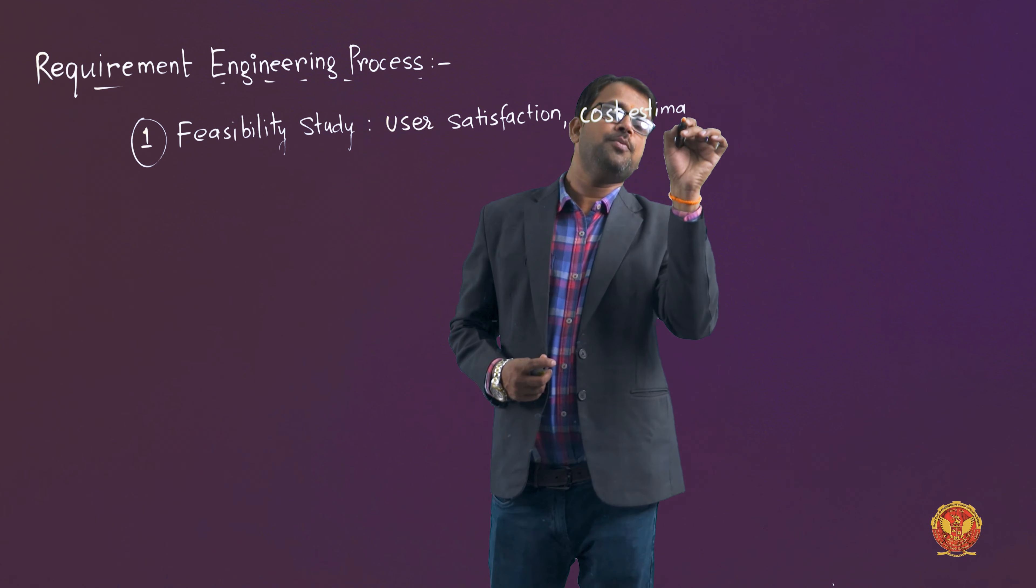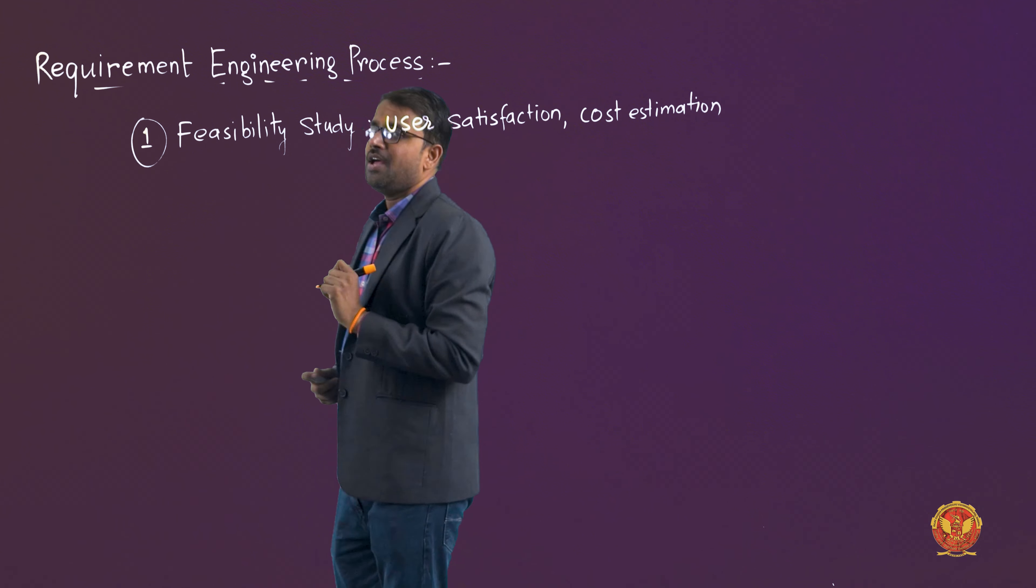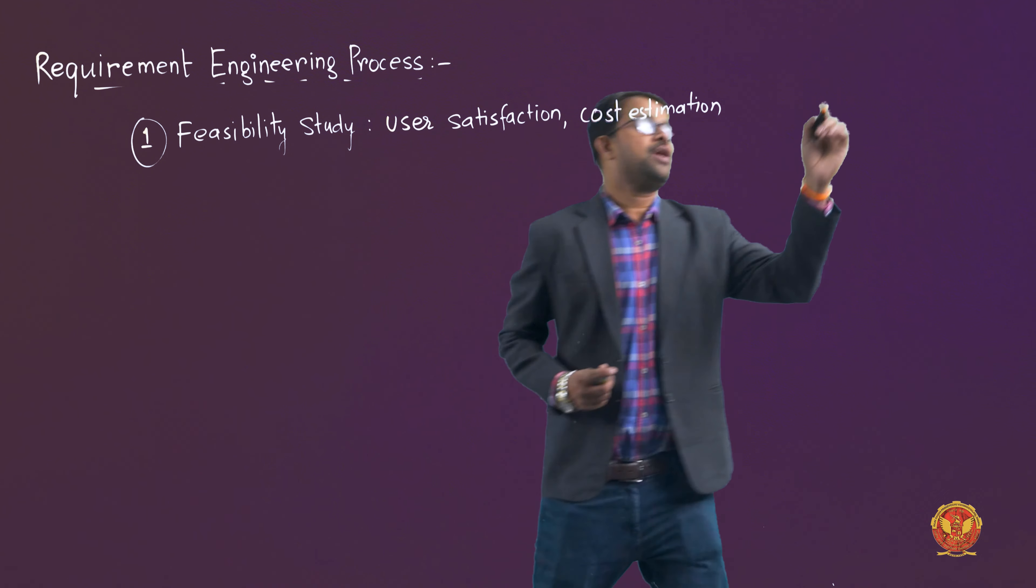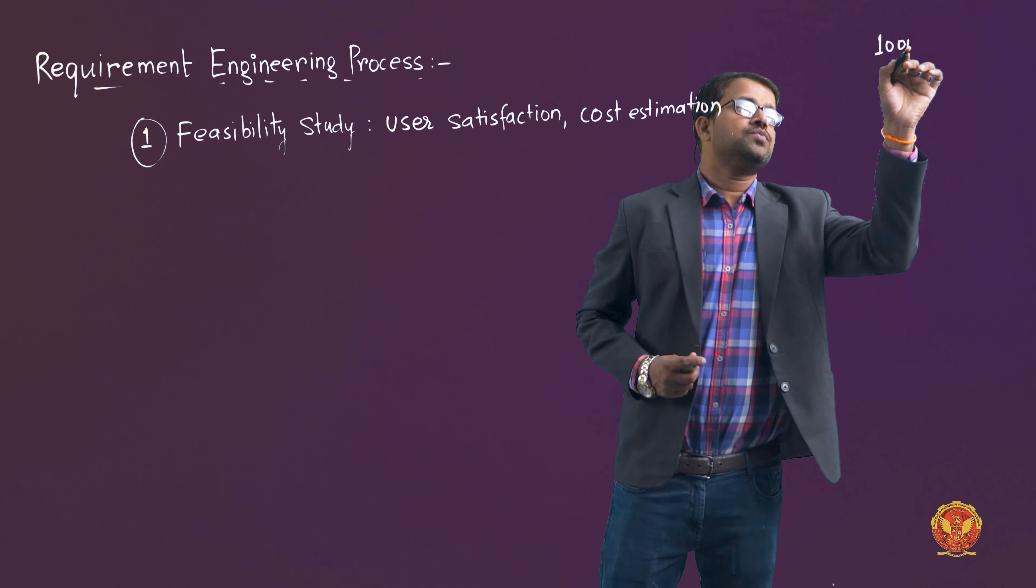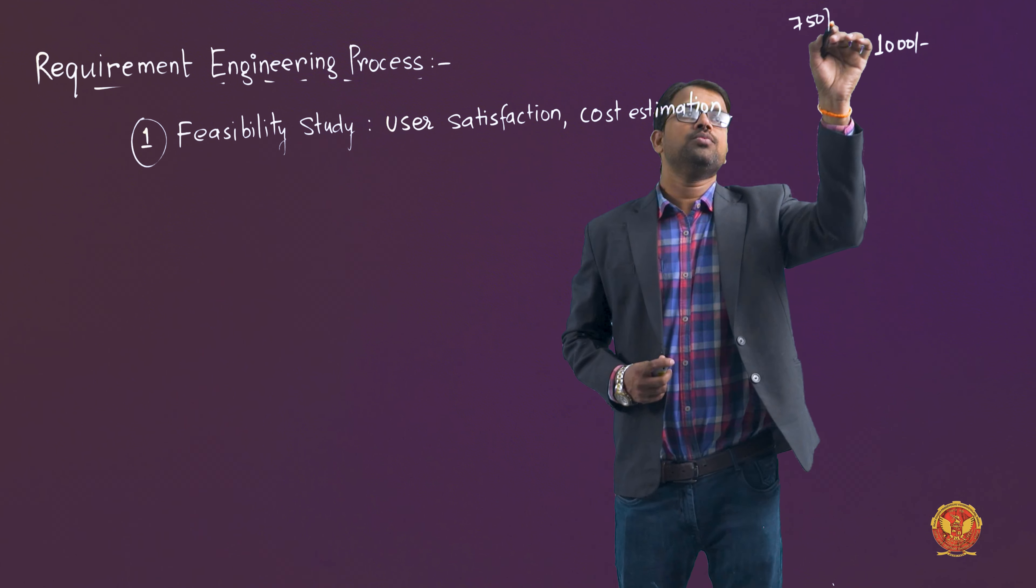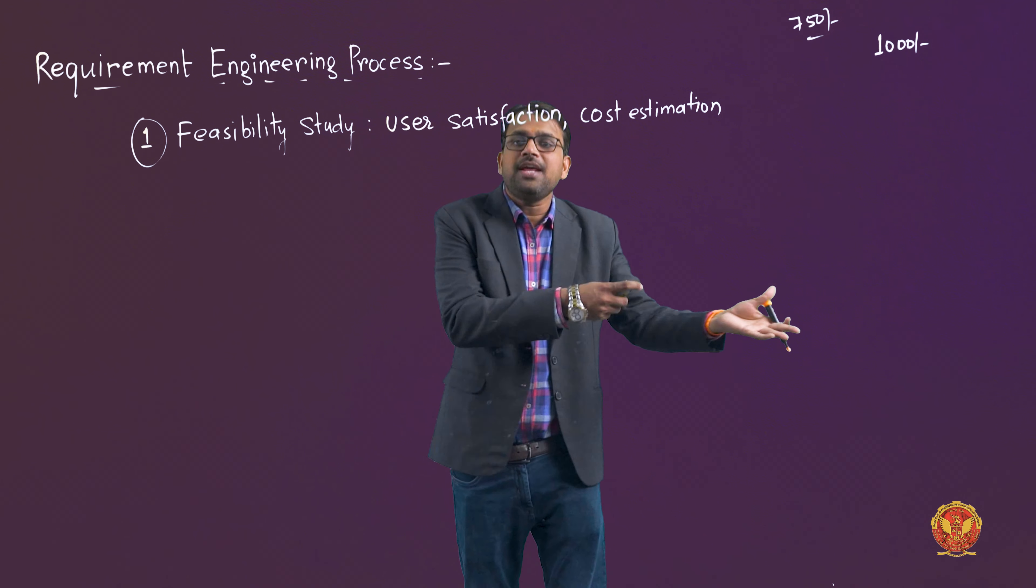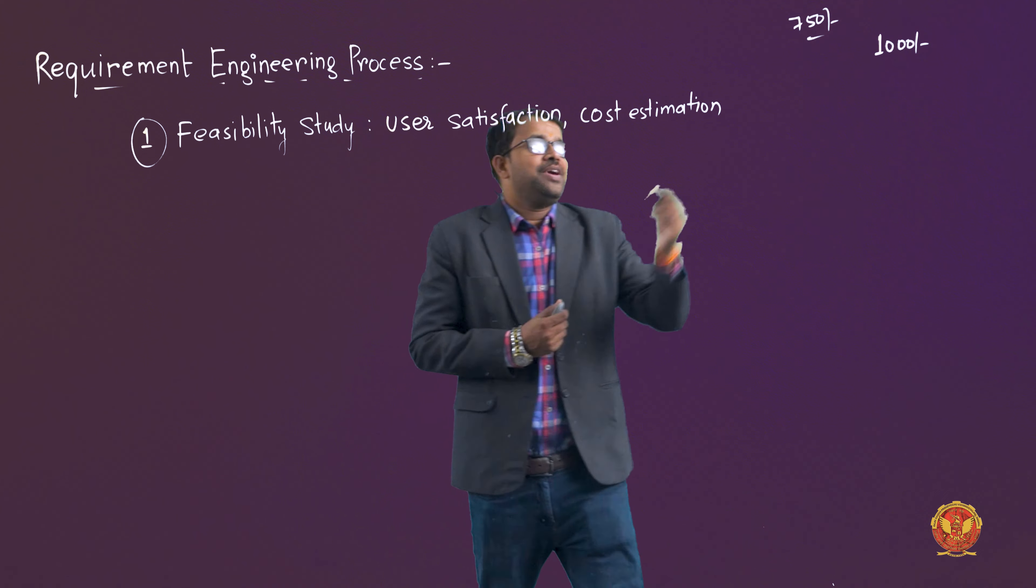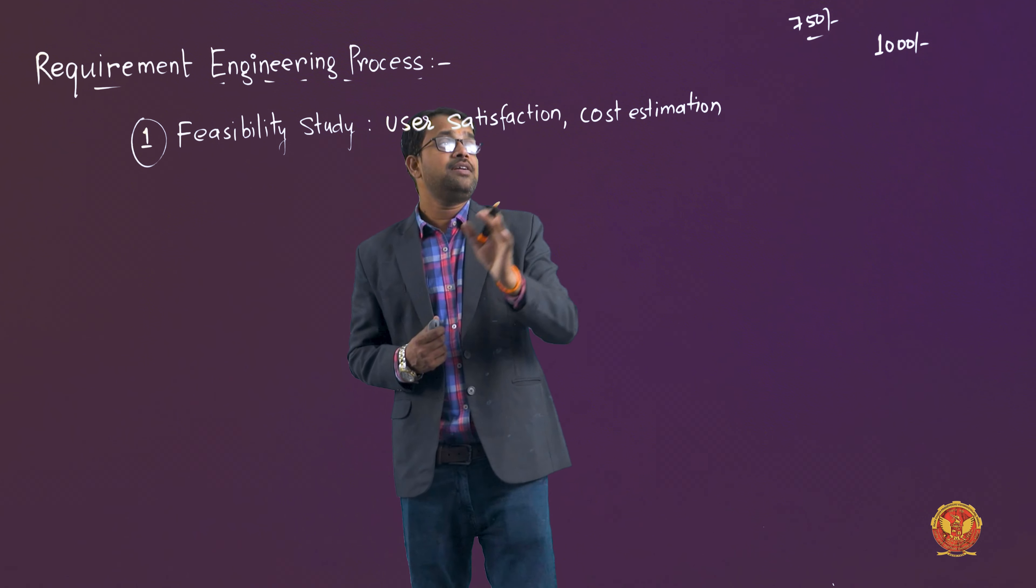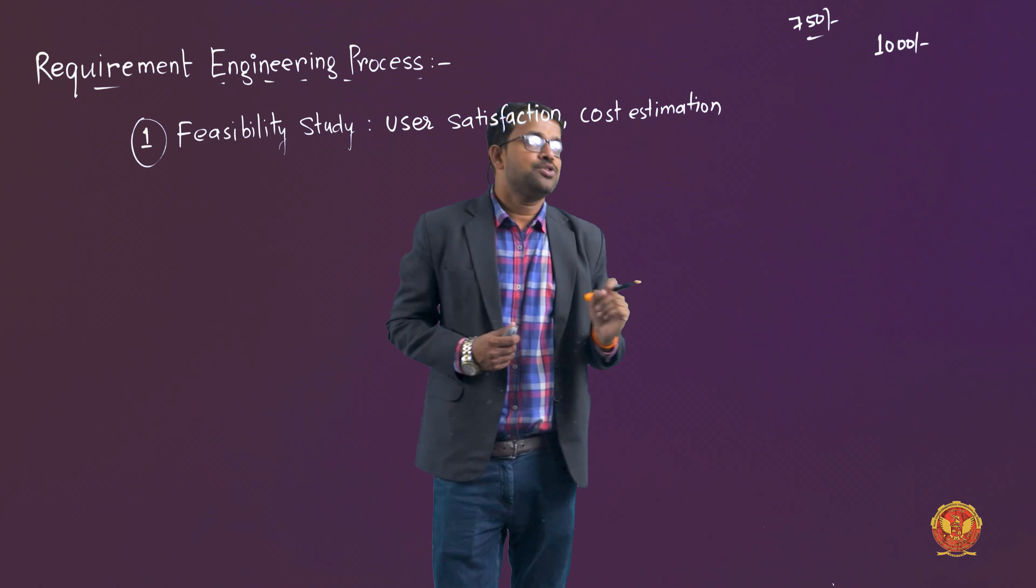Both parts are very important. Let's talk about cost first. If any particular project, suppose the work you are doing for 1000 rupees, but customer says no I will give you 750 rupees, can you do it? No. So you'll say the budget is not meeting. If 1000 rupees work for 750 rupees, you'll say it's not feasible.